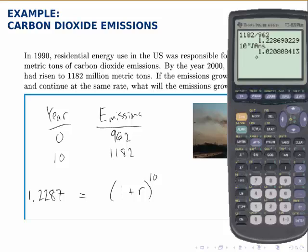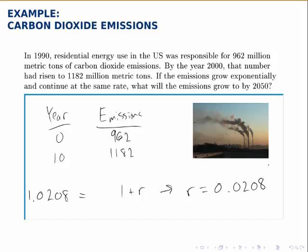In any case, this number equals 1 + r. Finally, to find r, just subtract 1 from that answer, and r is 0.0208, or 2.08%. Once we have that, we can fill in the full exponential model for this problem.